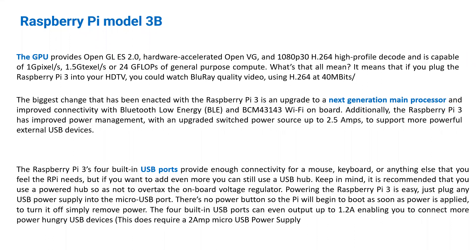One more change in Raspberry Pi 3 is improved Bluetooth connectivity — not merely Bluetooth, but Bluetooth low energy, which allows long-running type of systems. There is Wi-Fi on the board. Additionally, it has improved power management with a current sinking capability of 2.5 amperes.